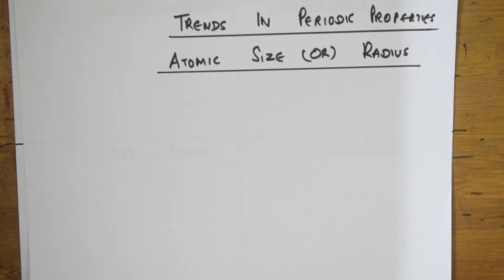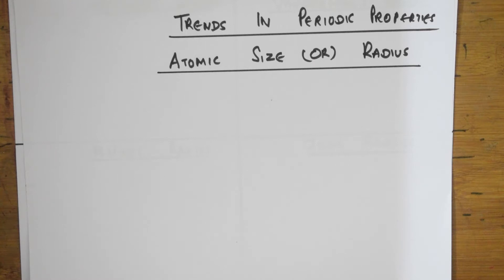Welcome students to one more session of inorganic chemistry on trends and periodic properties. Till now we have discussed Dobereiner's triads, Newland's octaves, Lothar Meyer's curve, Mendeleev's table, and the modern periodic table. I also covered inorganic tricks parts 2 and 3, differences between s-block, p-block, d-block, and f-block. Now I'll be starting with trends and periodic properties.